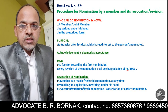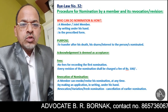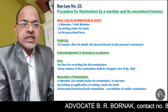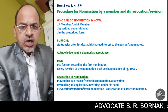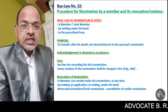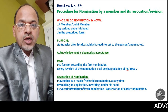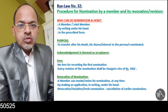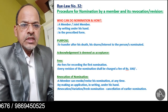Now, what is the purpose of making nomination? The purpose of making nomination is to transfer, after his death, his shares and interest to the person nominated. Means, he wants to put on record of the society his intention that after his death, to whom his shares and interest in the capital property of the society shall be transferred — by mentioning the name of the nominee or nominees in the nomination form.